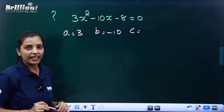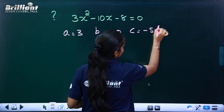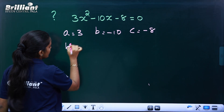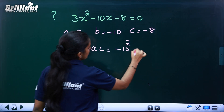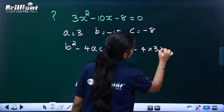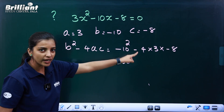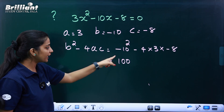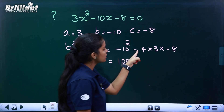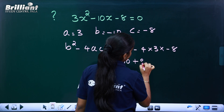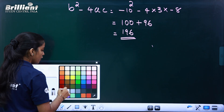For the second problem, what is C? It is minus 8. What is the negative sign? Then minus 8. The discriminant value is b² minus 4ac: minus 10 squared minus 4 into 3 into minus 8. Minus 10 squared is 100. Then negative times negative is positive: 4 into 3 into 8 is 96. So the discriminant is 100 plus 96 equals 196. Now we apply the formula.